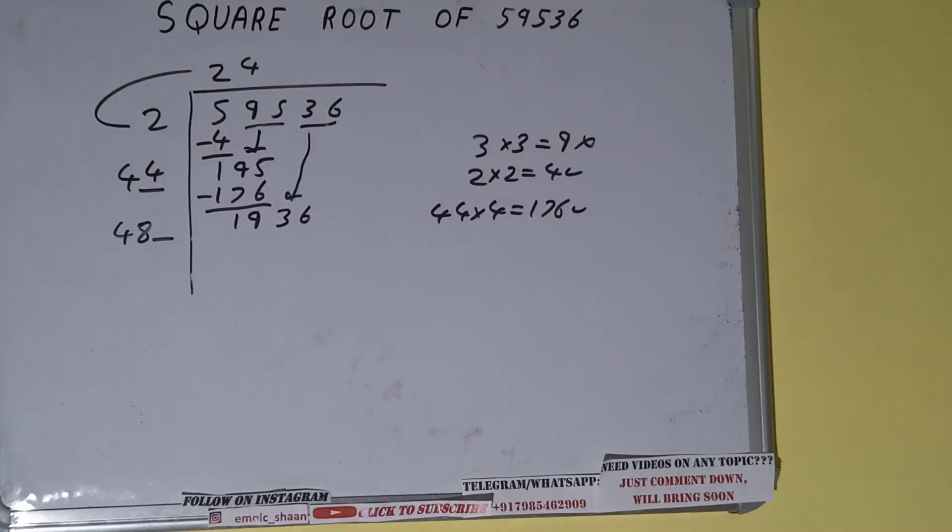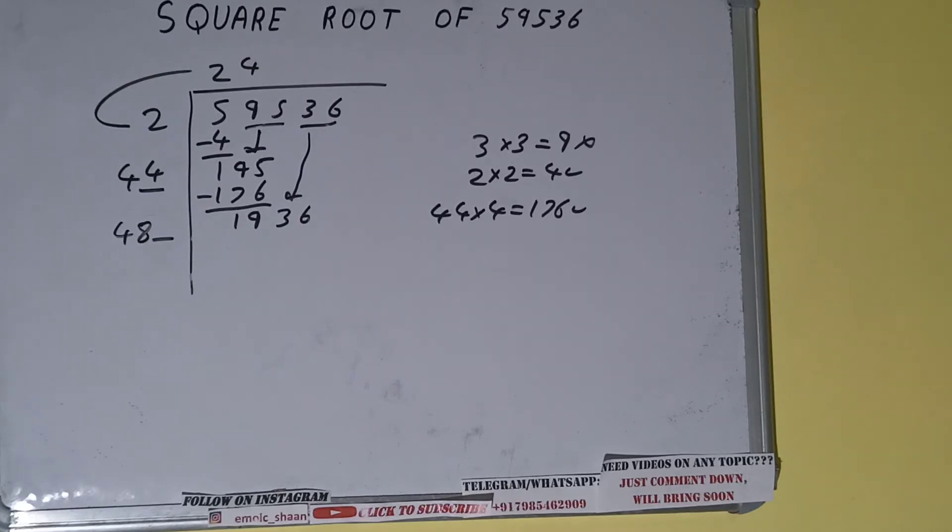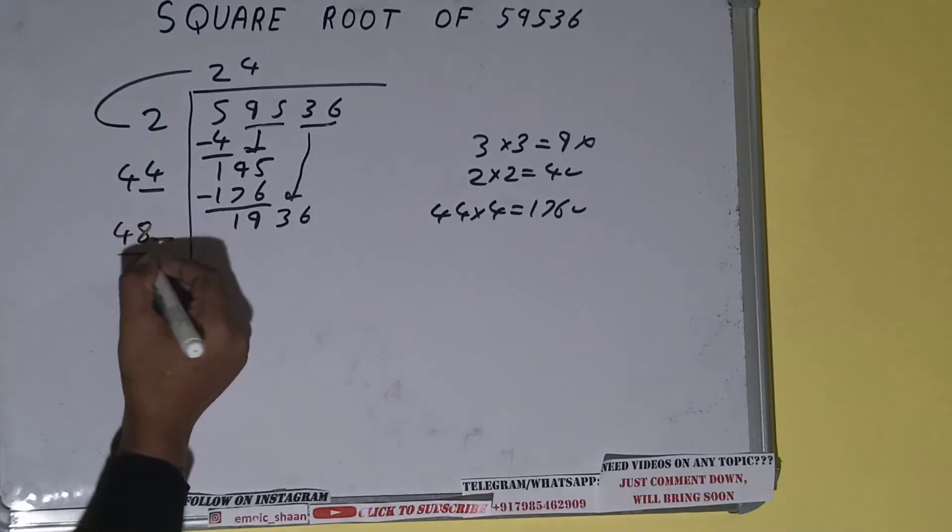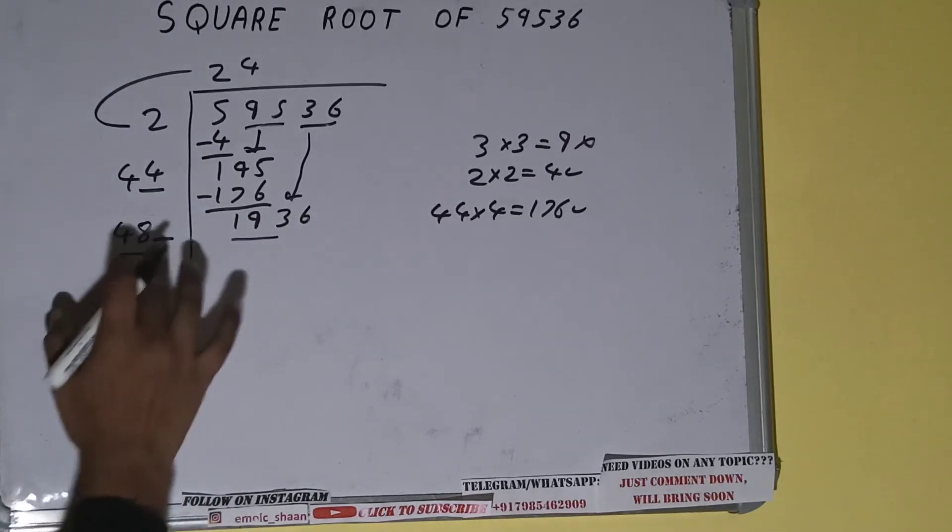Now whatever number we write here, we have to write here also. So we can try if we can first compare this 48 and 193. So 48 four times is 192, so we can try 4 times.